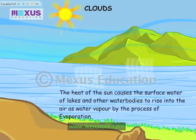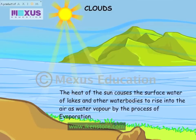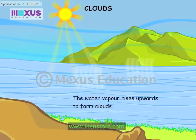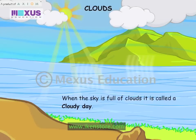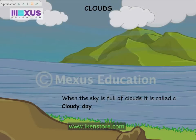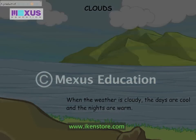The heat of the sun causes the surface water of lakes and other water bodies to rise into the air as water vapour by the process of evaporation. The water vapour rises upwards to form clouds. When the sky is full of clouds, it is called a cloudy day. When the weather is cloudy, the days are cool and the nights are warm.